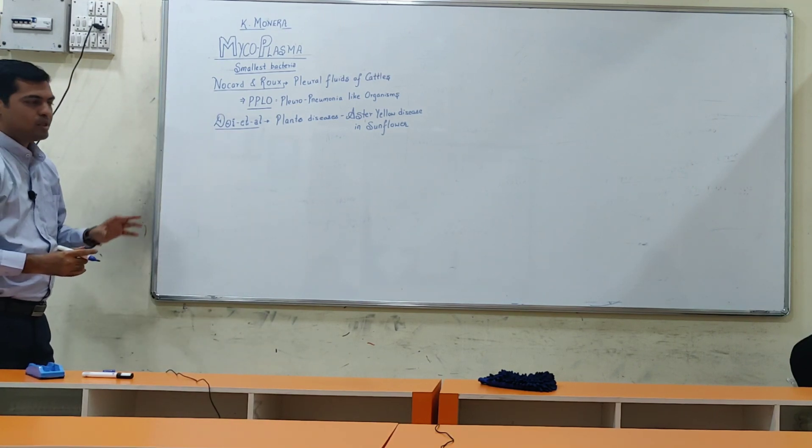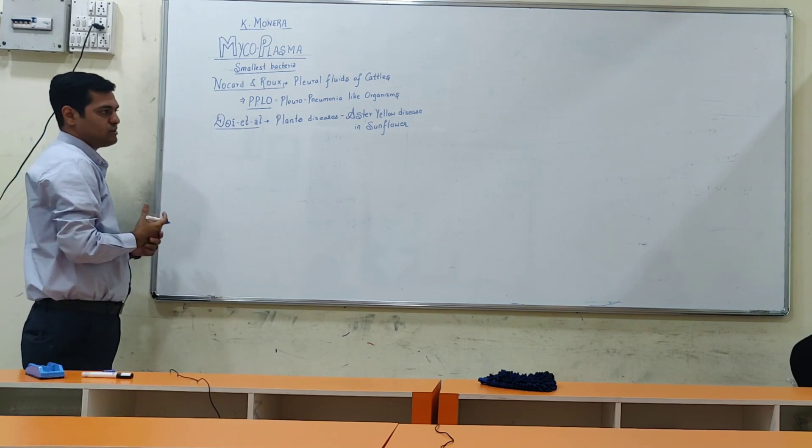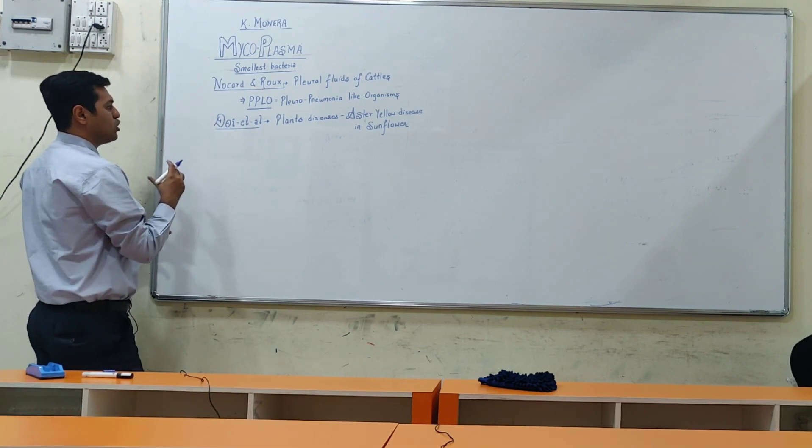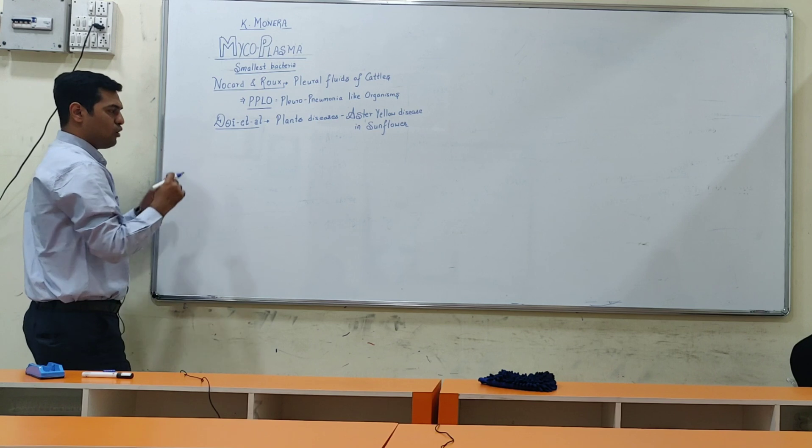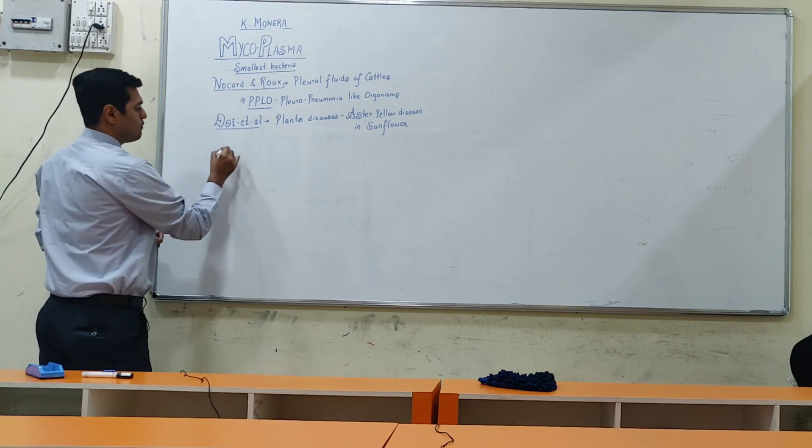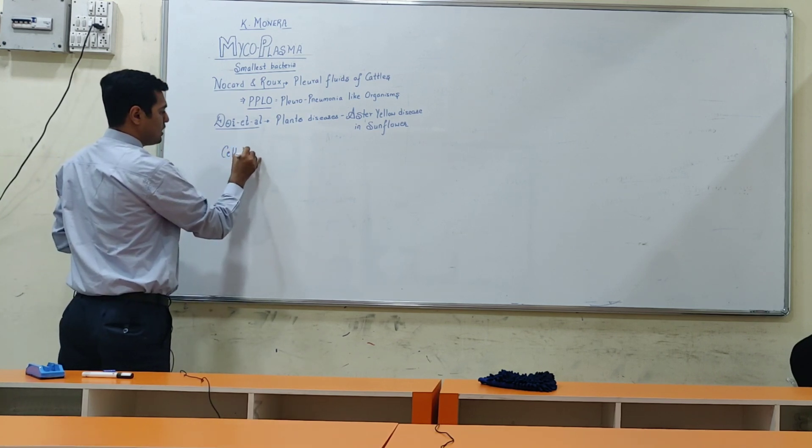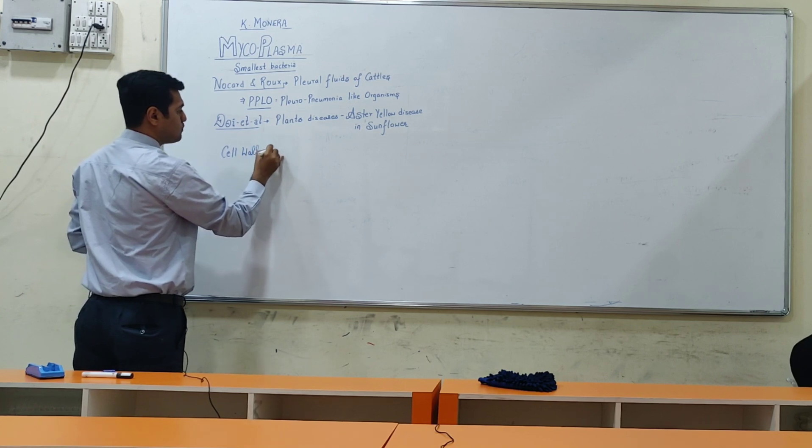That is about Mycoplasma. Now we discuss the unique characteristic features. One of the most important features is that cell wall is absent. This is the only organism in Kingdom Monera where cell wall is absent.